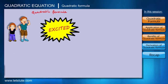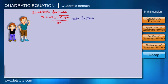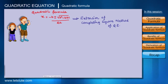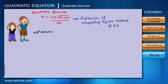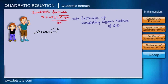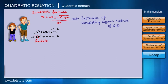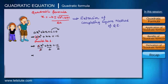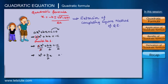After hearing about the benefits of this formula, the brothers got excited to know where it came from. I was happy to explain: it is an extension of the completing the square method. As you know, a quadratic equation can generally be written as AX² plus BX plus C equals zero. In the completing the square method, we take C to the right-hand side and ensure the coefficient of X² is 1 by dividing the whole equation by A.